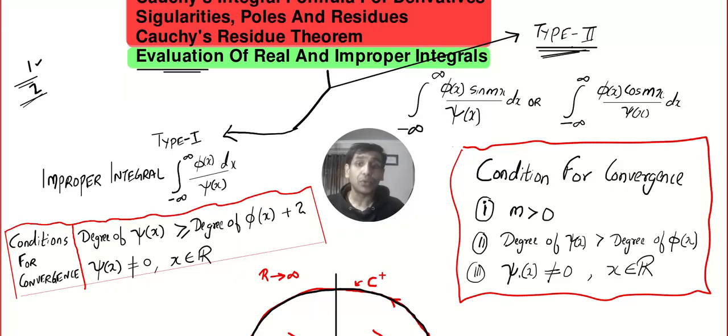Now let's quickly move on to Type 2. If you watched all four videos, you'll find Type 2 very easy because it's connected with Type 1. Can you see it's an improper integral minus infinity to infinity, polynomial divided by polynomial, multiplied by sine or cos. The condition for convergence: m should be a positive number, degree of the denominator is bigger than degree of the numerator, and the denominator should never become zero.